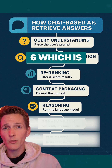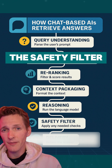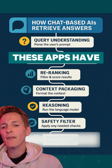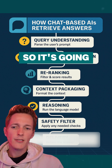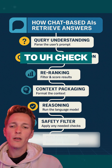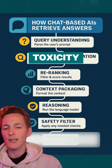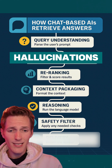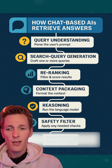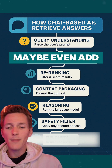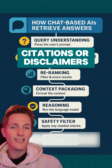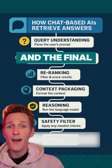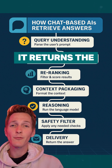And now we're on to step six, which is the safety filter. Like I said, these apps have their own rule sets, so it's going to check for things like toxicity, private data, and possibly hallucinations, and then maybe even add citations or disclaimers if they're required.